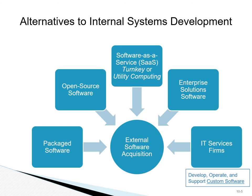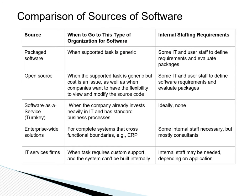IT services firms such as CGI Momentum are typically used when a custom application is needed by an organization and they don't have the resources within the organization to develop it. This table lists the situations where the organization needs to consider a particular software source and the internal staffing required for that type of software.